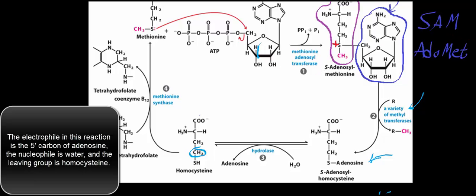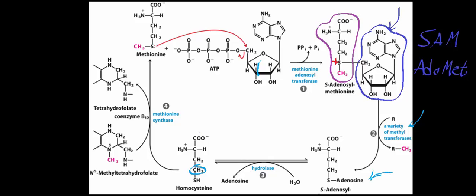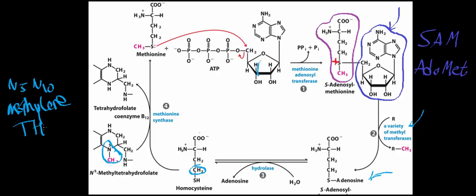Now we're about to see another biosynthesis — one of the ways we synthesize methionine. The enzyme that does this is called methionine synthase. This particular enzyme requires two coenzymes: one is vitamin B12, also called cobalamin, and the other is N5-methyltetrahydrofolate. It's called N5-methyl because this particular methyl group is attached to nitrogen number five on tetrahydrofolate.